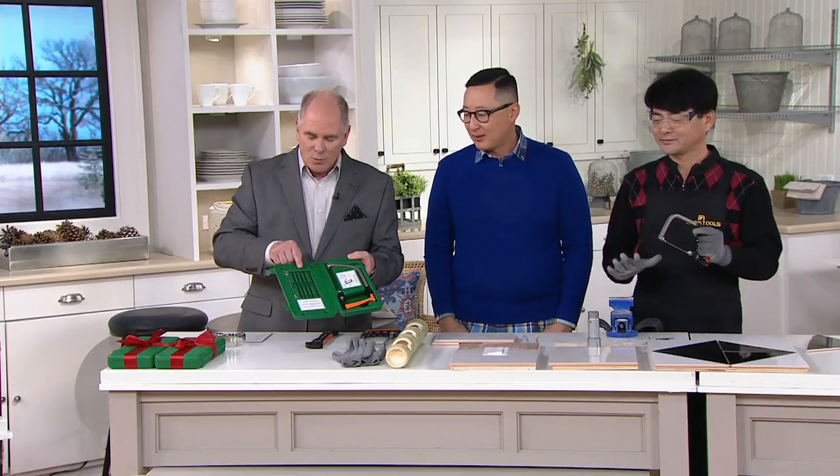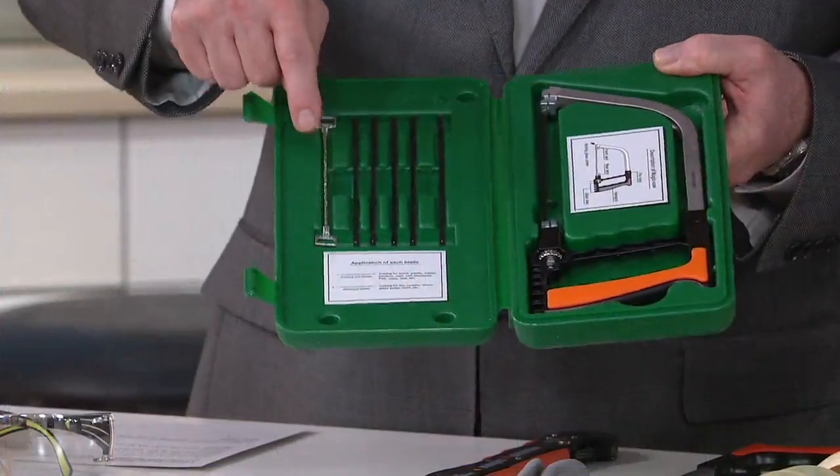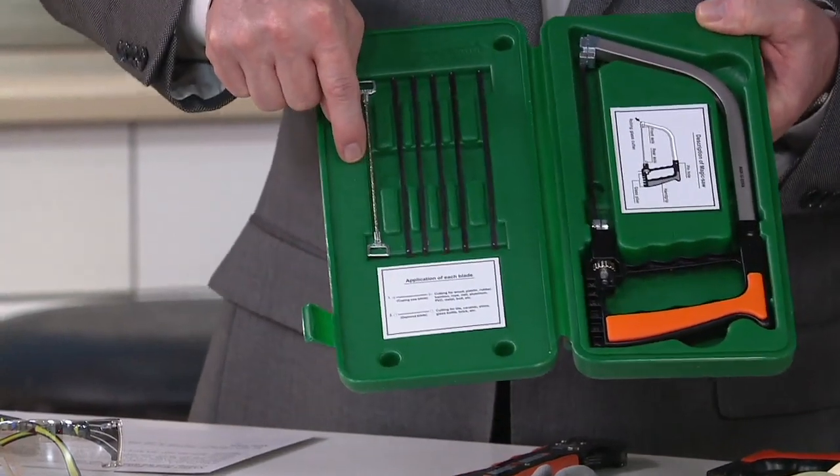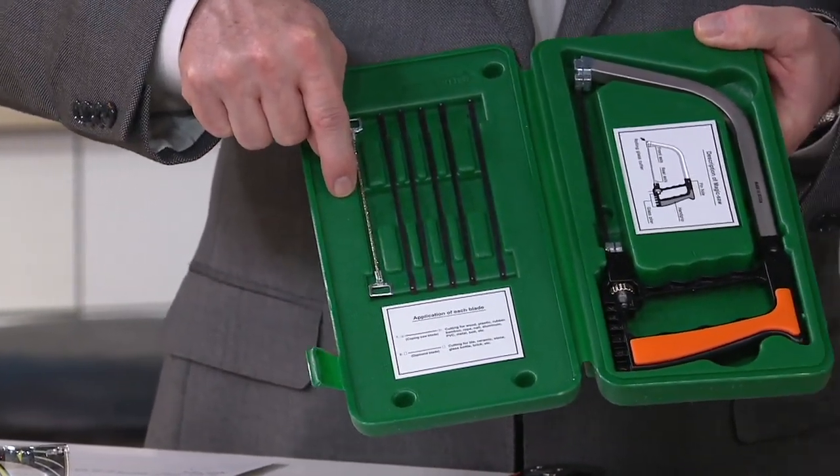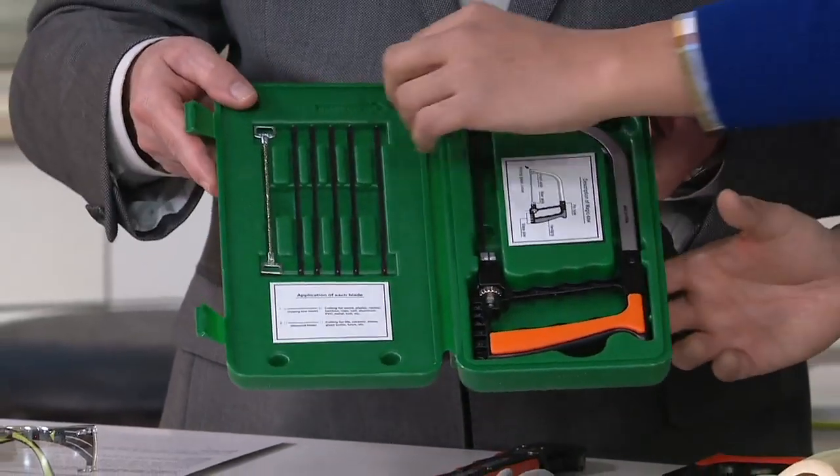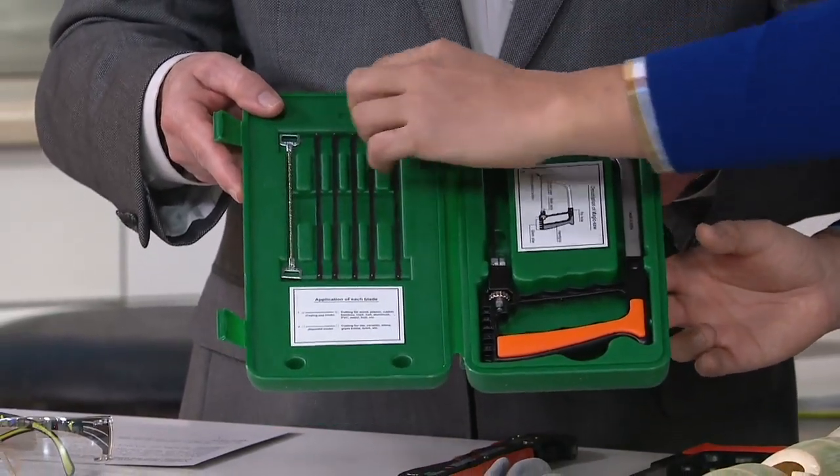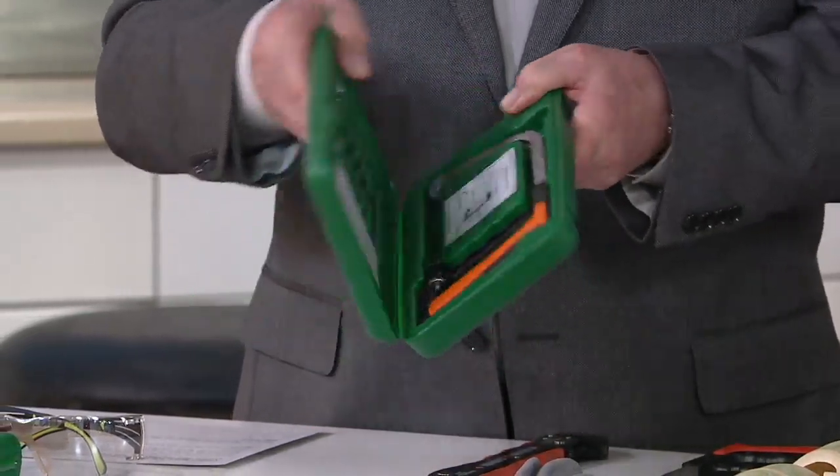You get the saw, you're getting one, two, three, four of his traditional blades. And then a blade that is designed to be able to cut through glass. That's our diamond blade. And we got magnets here to hold it down. It's a gorgeous little case. And I'll tell you what, it works.